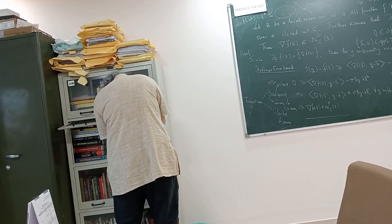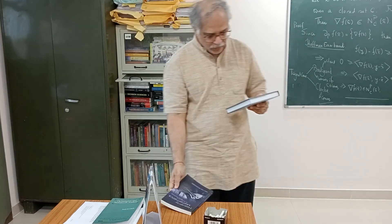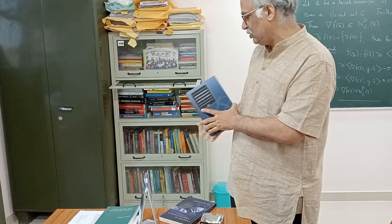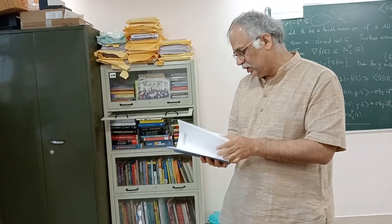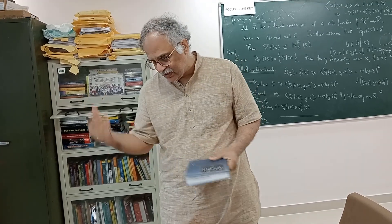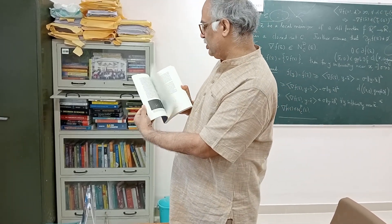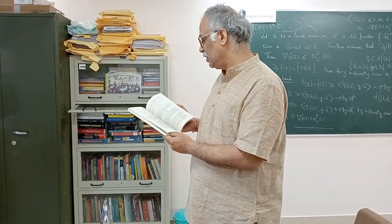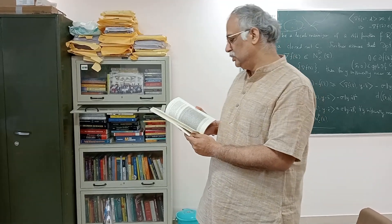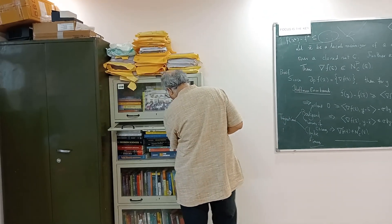Glen Van Brummelen also has another book, 'The Mathematics of the Heavens and the Earth: The Early History of Trigonometry,' which actually precedes that book. In it you learn how the whole idea of trigonometry developed and how early astronomy begins. There is also 'Heavenly Mathematics: The Forgotten Art of Spherical Trigonometry,' about the mathematics early astronomers used, many methods of which are still in use today. I'll do a video on all three of these books.